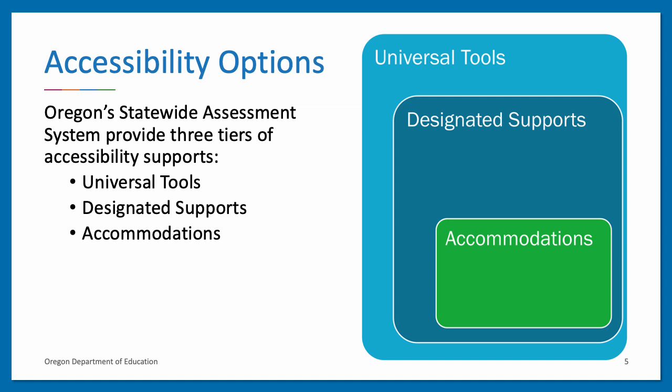Universal tools are automatically available to all students and can be student selected. Designated supports are set in TIDE by test administrators and are available to any student based upon identified need. Accommodations are also set in TIDE by TAs and are available to students who have that support documented in their IEP or 504 plan. Within each of these tiers, any specific support may be embedded or incorporated in the testing interface, such as text-to-speech, or they may be non-embedded or outside of the testing interface, such as the use of scratch paper. For more details on each tier of support, consult Table 1.1 in the Oregon Accessibility Manual.